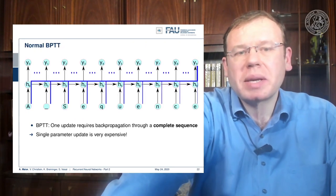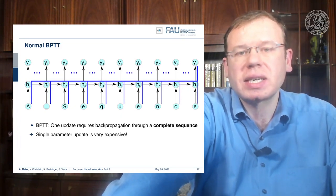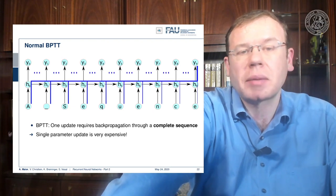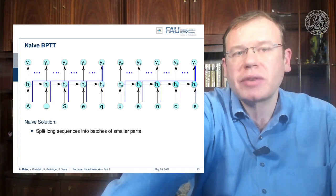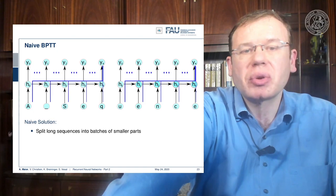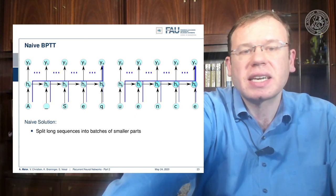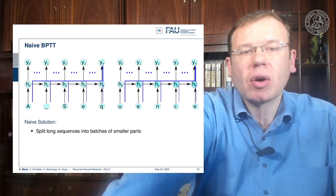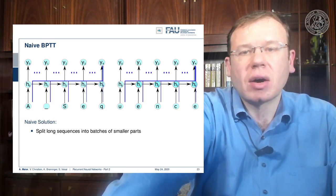There are problems with normal backpropagation through time: you need to unroll the entire sequence, and for long sequences and complex networks this means a lot of memory consumption and each parameter update is very expensive. A naive splitting approach — splitting the sequence into batches and reinitializing the hidden state each time — allows training but loses dependencies over long periods of time. In that case, the first input can never be connected to the last output.